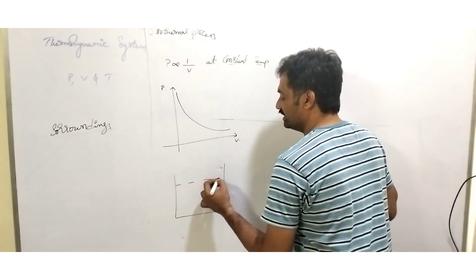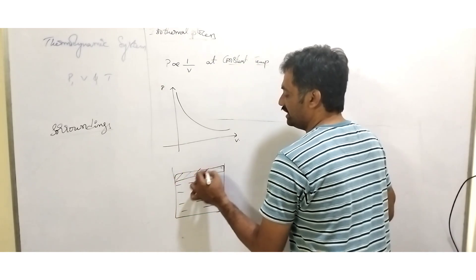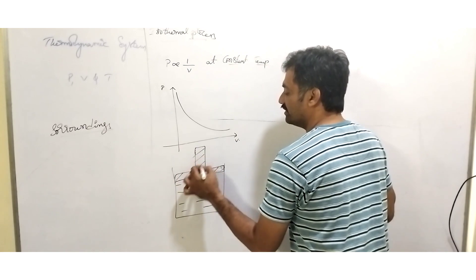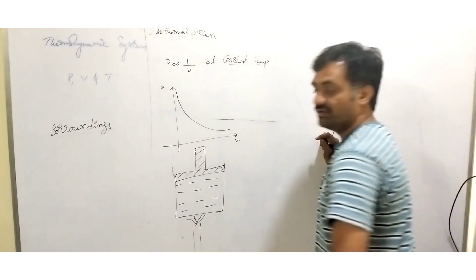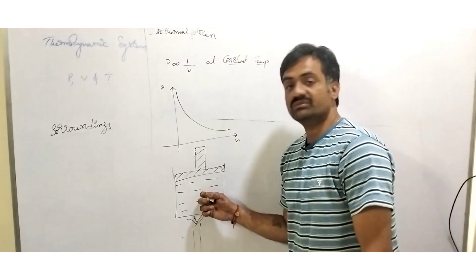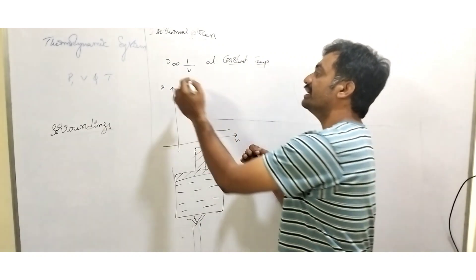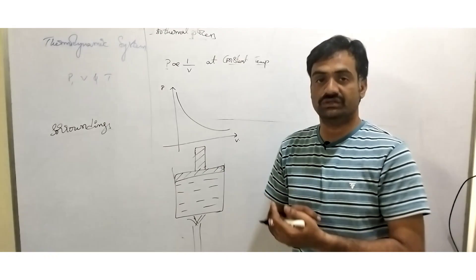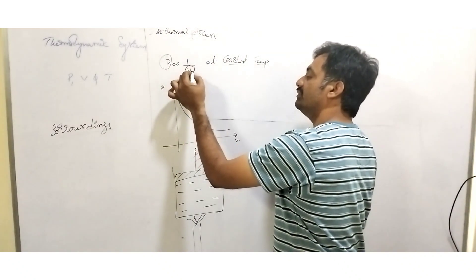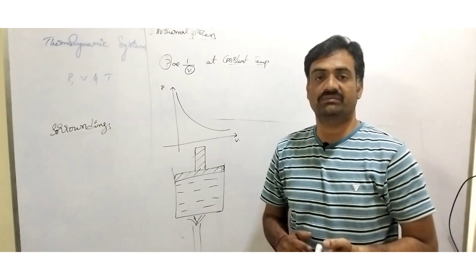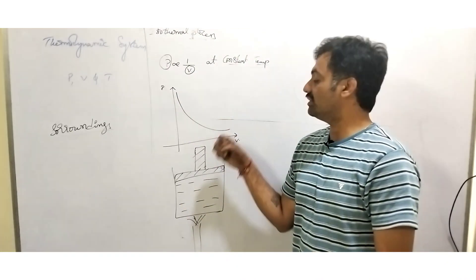Let us discuss by considering a system. We have considered an example in which N moles of gas is present, and above the surface of the gas, a frictionless freely moving piston is considered. When we heat the system, we are transferring heat to it. As the system gains heat, in order to maintain constant temperature, the volume tries to increase, thereby pressure decreases. When the system is compressed, as volume decreases, pressure increases to maintain constant temperature. In this way, constant temperature is maintained by absorbing or liberating heat.